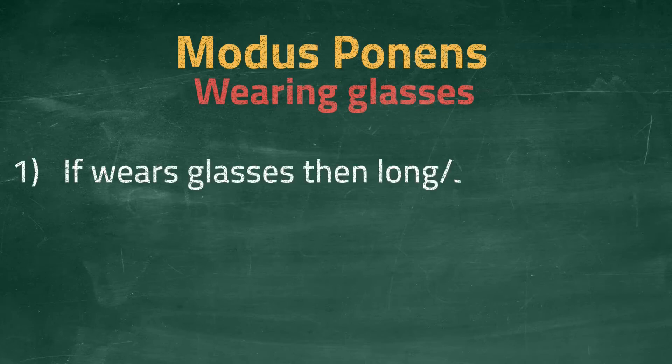We begin with the premise. If I wear corrective glasses, then I must be long or short-sighted. If we agree this to be correct, we can move on to the next statement.